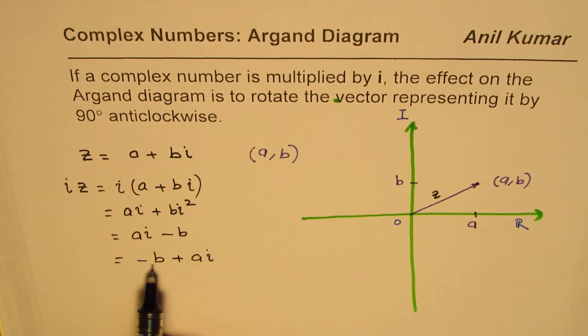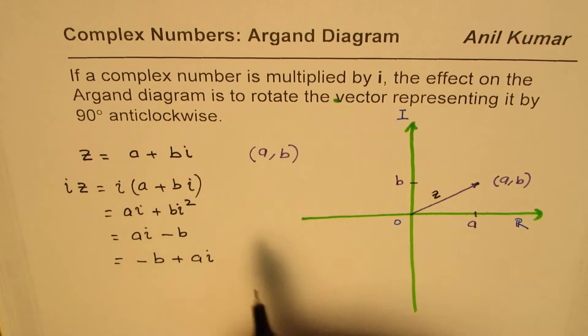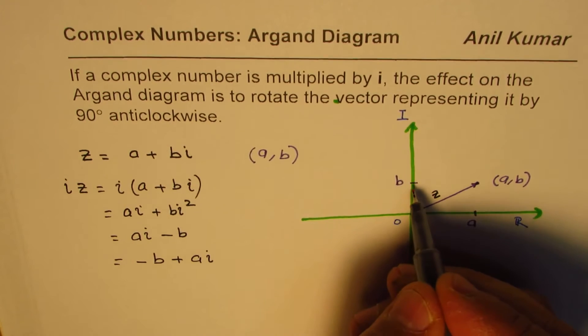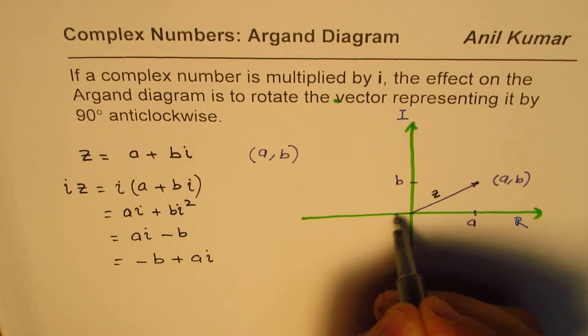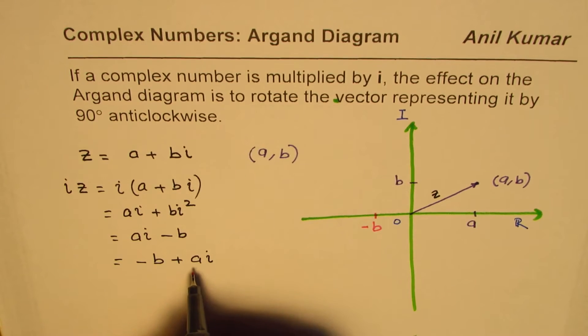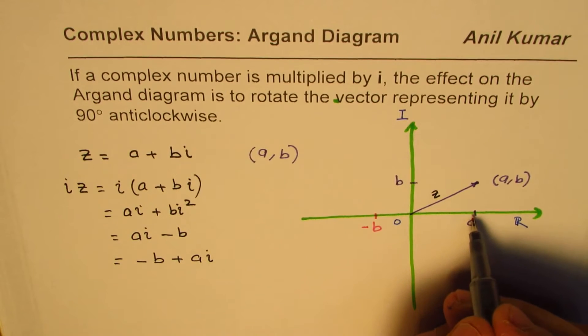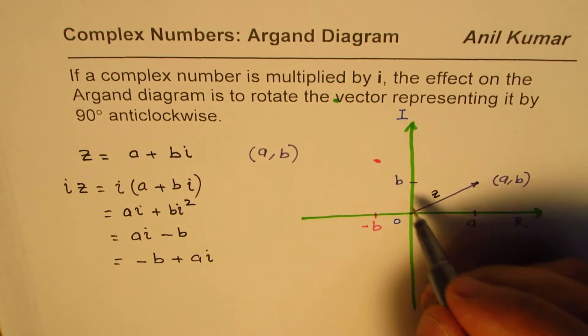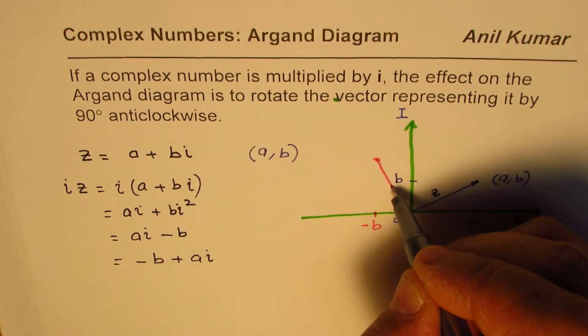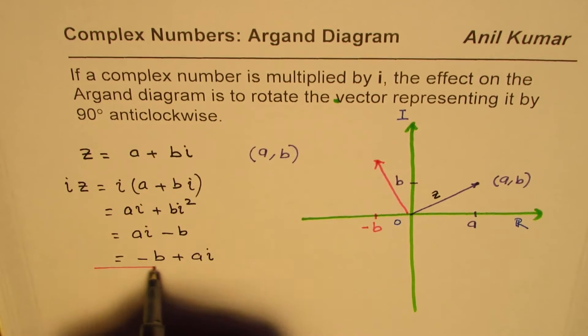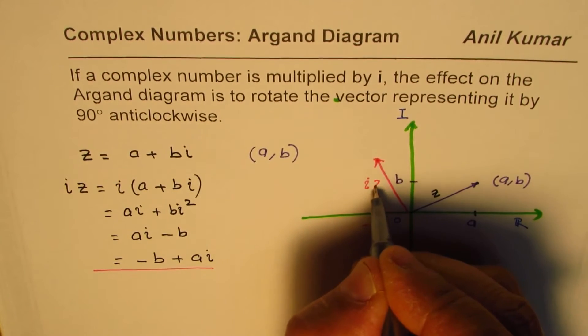So, it becomes minus b plus ai, which could be represented now on the same Argand diagram as minus b. So, that much of unit I am taking along this direction. So, this is minus b. a along the vertical axis. So, this much unit I am taking around kind of here. So, that becomes the point. And this arrow joining with the origin represents the complex number iz.